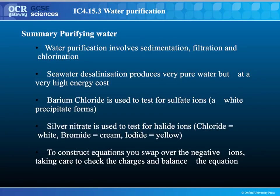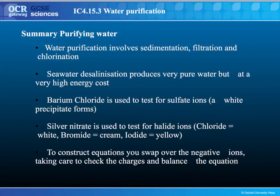In summary, water purification involves sedimentation, filtration, and chlorination. Desalination produces very pure water but at a very high energy cost. We use barium chloride to test for sulfate ions, which forms a white precipitate, and we use silver nitrate to test for the halide ions — you get a white precipitate with chloride ions, a cream precipitate with bromide ions, and a yellow precipitate with iodide ions. A little trick to construct equations is to basically swap over the places of the negative ions, taking care to check the number of charges and balance the equation. Thank you very much for watching. I hope you've enjoyed this series and found it useful. Good luck in your exams.